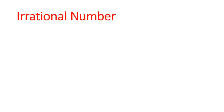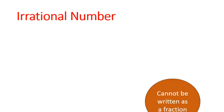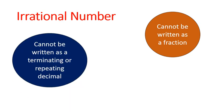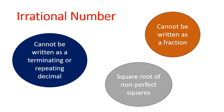Now let's talk about irrational numbers. Irrational numbers are the opposite of rational numbers. They cannot be written as fractions. They cannot be written as terminating or repeating decimals. And the most common place that you find irrational numbers is actually in the square root of non-perfect squares. So let's see some examples of that.